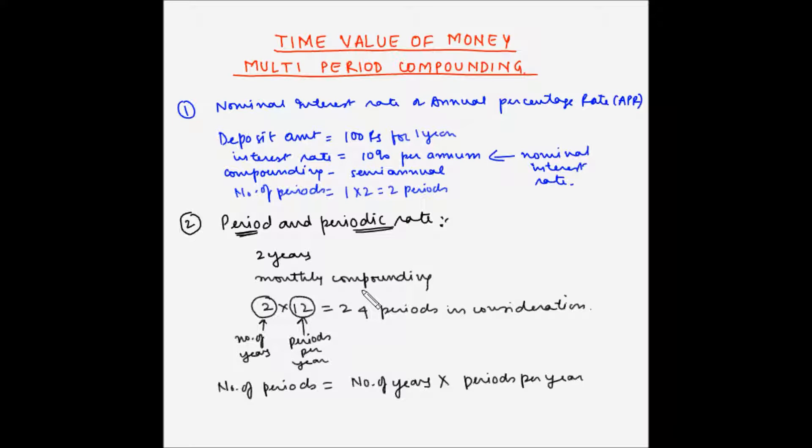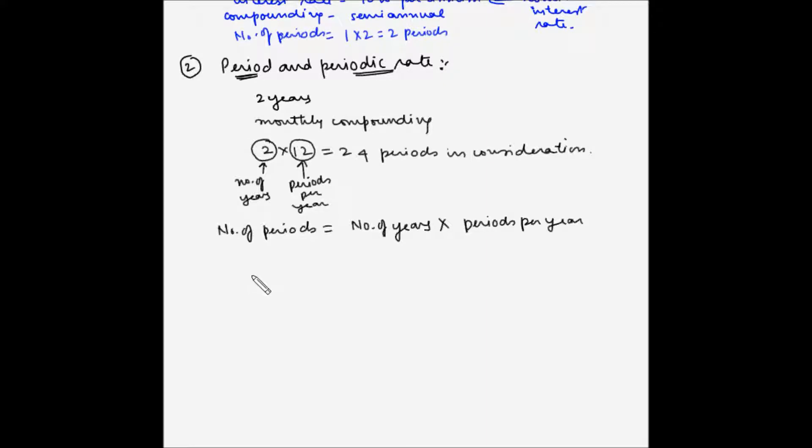It can be rate per year, per 6 months, per quarter, per month, etc. So, the periodic rate can be defined as nominal interest rate or APR divided by number of compounding periods per year.